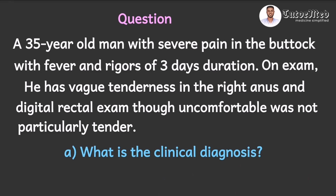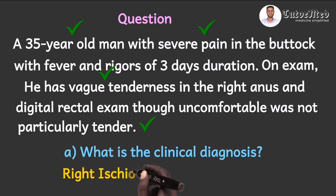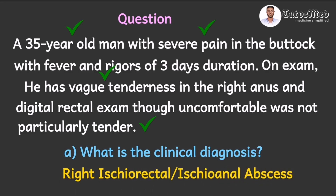Let's take a few seconds to think through this case. The relevant information are the patient's age and sex — he is a 35-year-old man — his presenting complaint, which is severe pain in the buttocks associated with fever and rigors of three days' duration. Another relevant point is that he has vague tenderness in the right side of the anus, and DRE, although uncomfortable, was not particularly tender. So the clinical diagnosis is a right ischioanal abscess, or a right ischiorectal abscess.